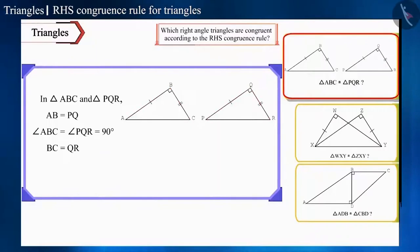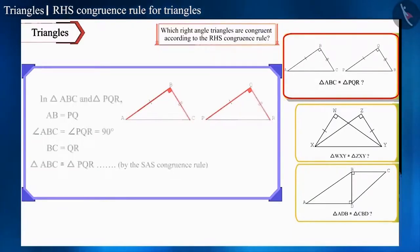Friends, in the first pair of triangles, we are given right angle triangles, but the two sides and the included angle of these two triangles are equal. Therefore, as per the given information, the two triangles are not congruent by the RHS congruence rule, but they are congruent by the side angle side or SAS congruence rule.